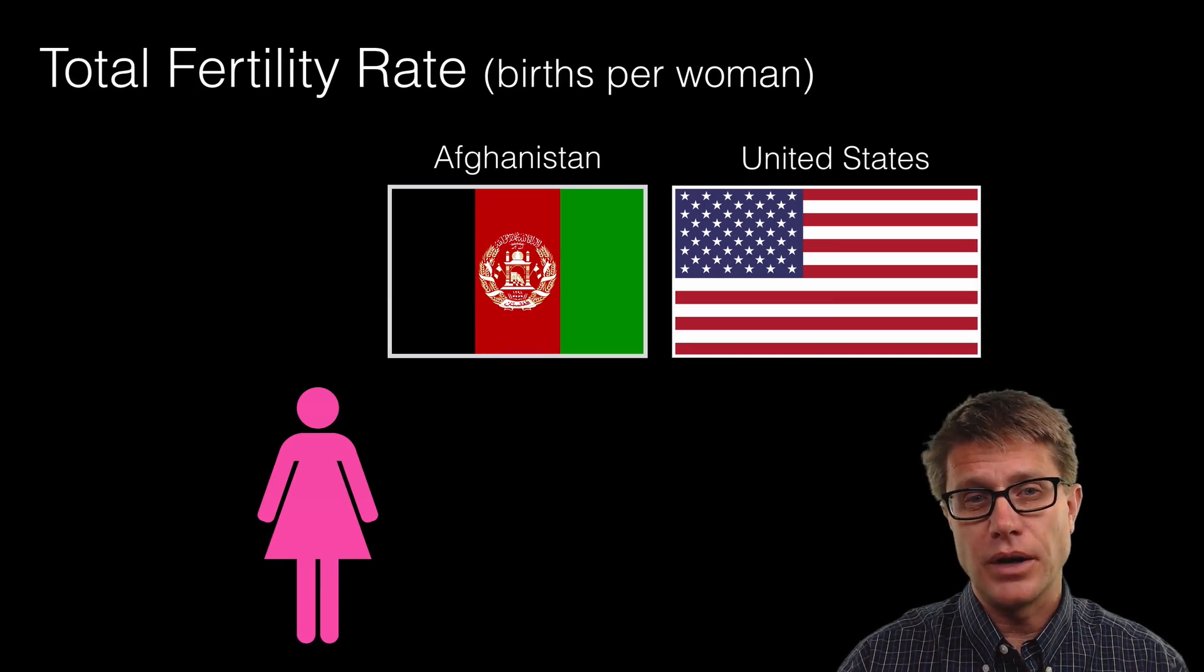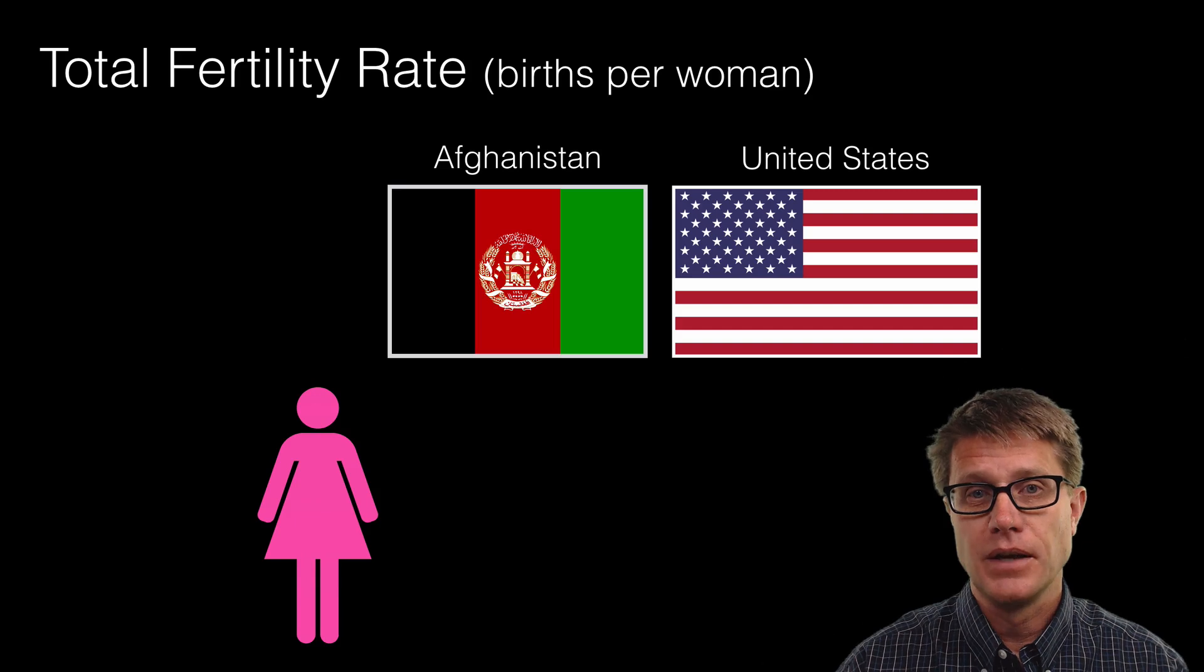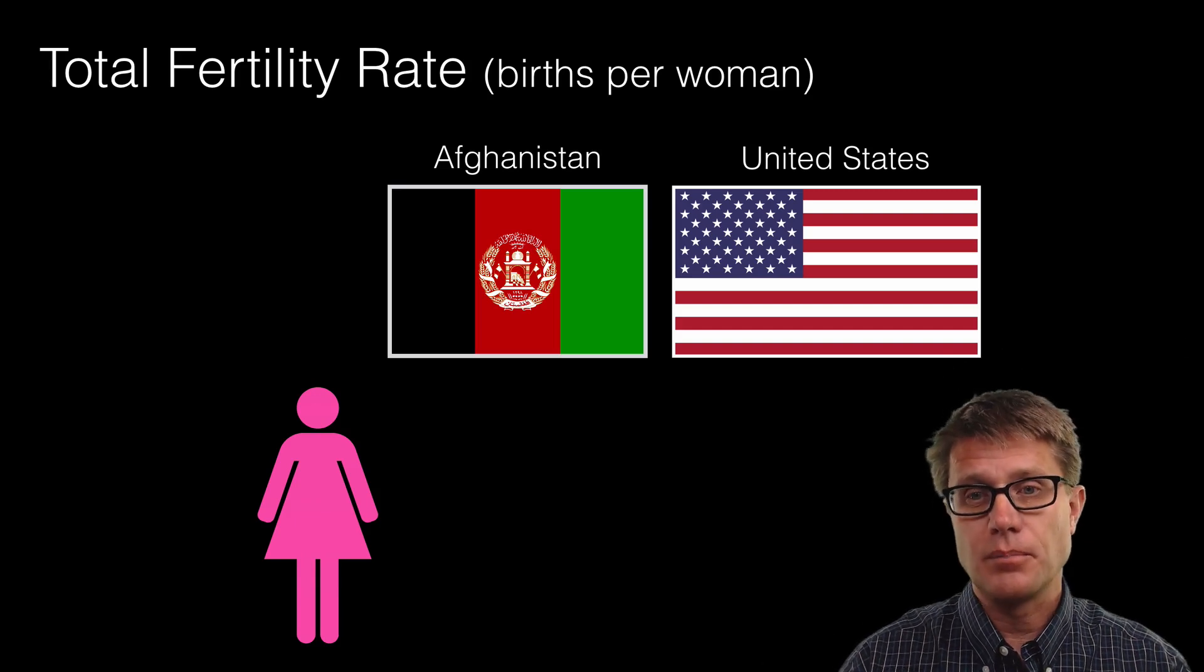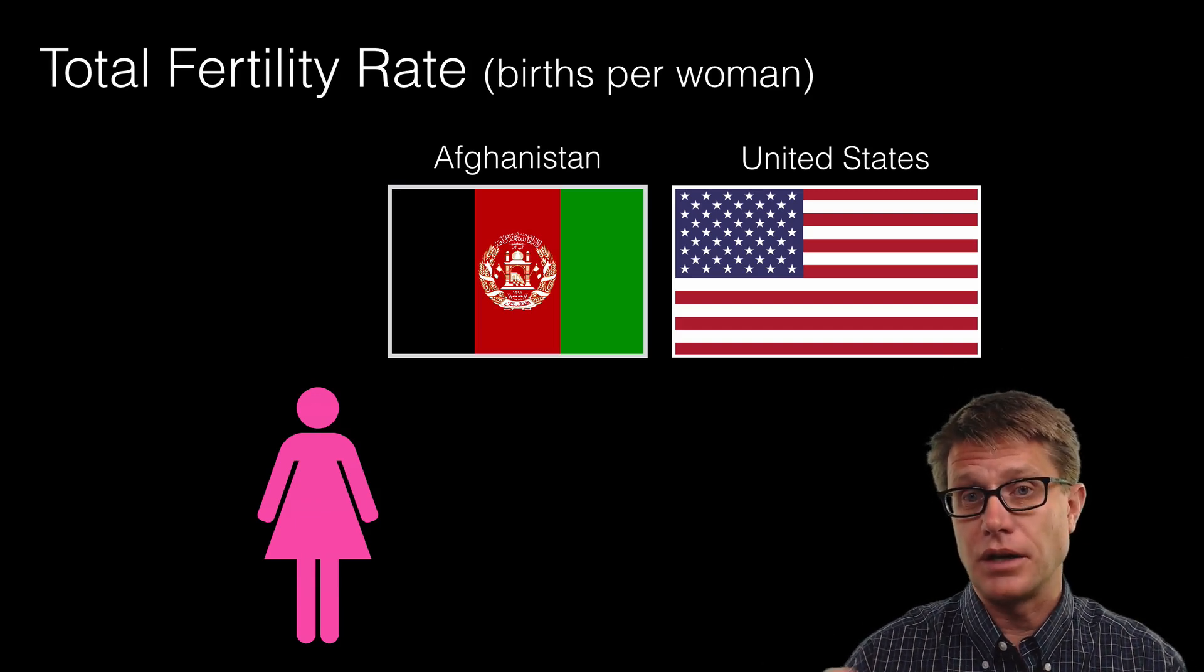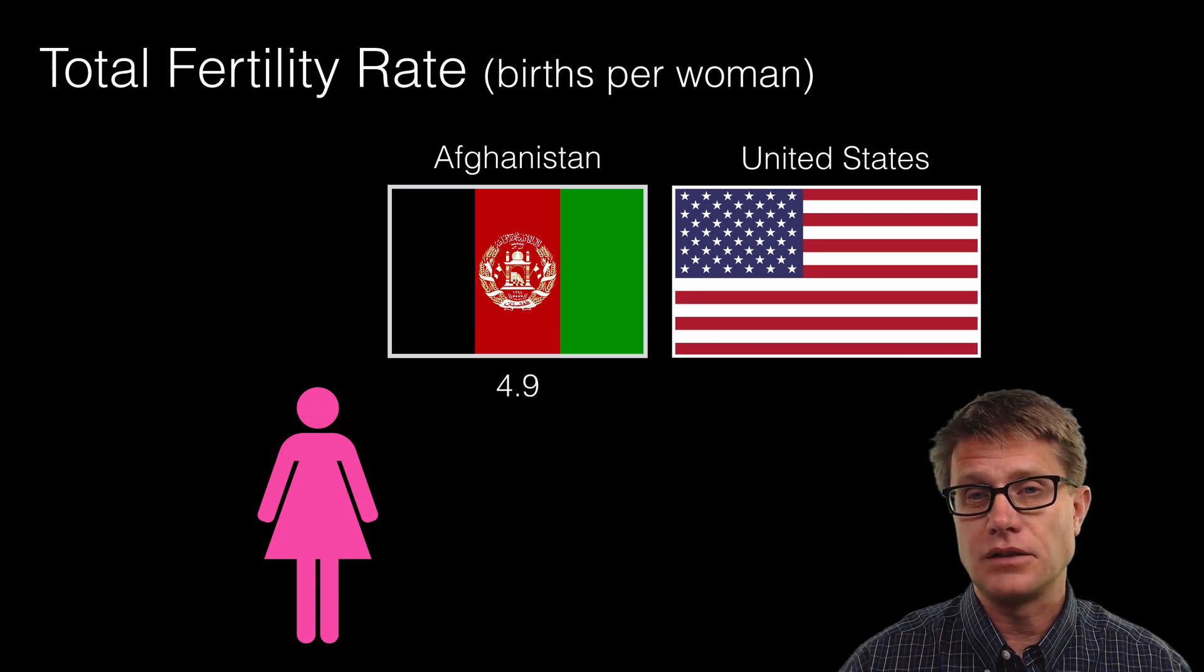Now what is changing the birth rate? We call that, demographers call that, the total fertility rate. That is going to be the number of births per woman during her reproductive period of time. And so if we look at what it is in Afghanistan, it is 4.9.